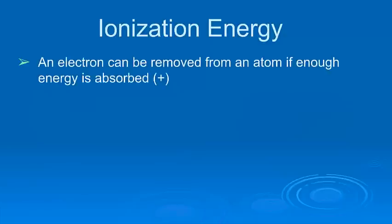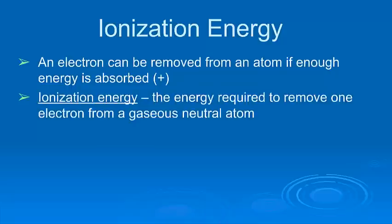Ionization energy, the definition is that if you want to remove an electron from an atom, you want to create an ion, ionization, you have to add some energy. And so ionization energy is the amount of energy that's required to remove one electron, but from a gaseous neutral atom. So the atom has all its electrons, normally it's neutral, not an ion.